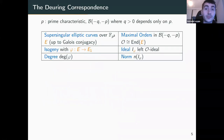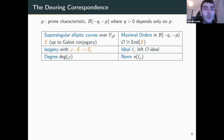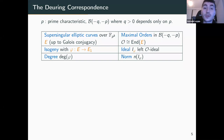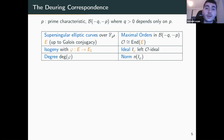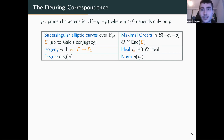The Deuring correspondence basically tells me that these two families of graphs are related to one another. If I take p, the prime characteristic, then there exists some integer q, which depends only on p, such that for the quaternion algebra B minus q minus p, my two graphs are basically the same. So for every isomorphism class of supersingular curve, I have a corresponding isomorphism class of maximal order inside B_{-q,-p}, and this is given by the endomorphism ring.